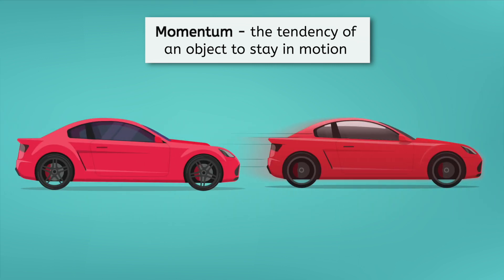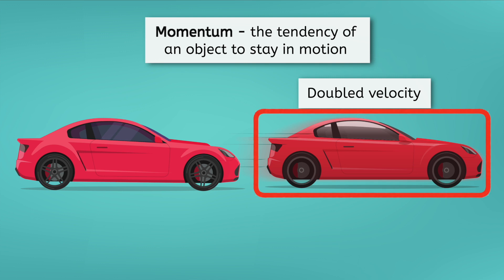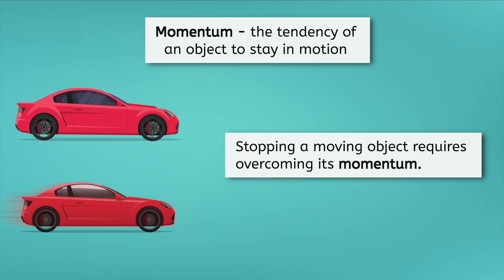What about a case where two identical cars are on the road, also needing to stop, but one car is driving slowly and the other is speeding along with double the velocity? They have the same mass, but the faster car still has more momentum, so it will be harder to stop. Stopping a moving object always requires overcoming its momentum, and remember that momentum can be increased with either mass or velocity.